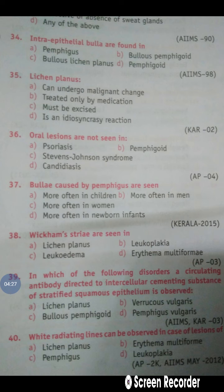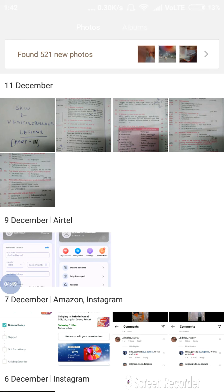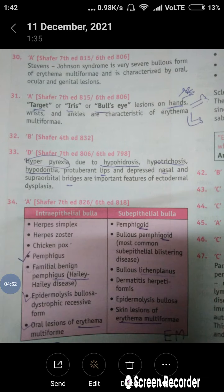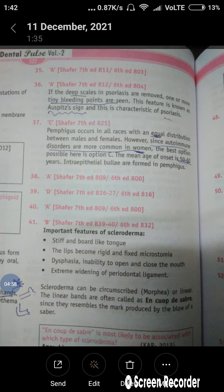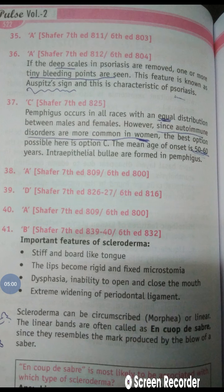Question number 36: Oral lesions are NOT seen in which of the following? Among the four options, Psoriasis is the only condition in which oral lesions are not seen. That's why option A is correct — Psoriasis is the one in which oral lesions are not seen. The explanation notes that if the deep scales of psoriasis are removed, one or more tiny bleeding points are seen.